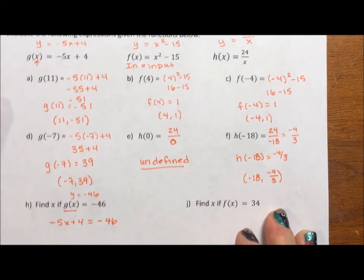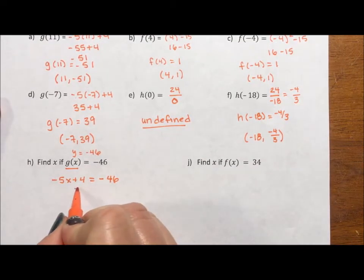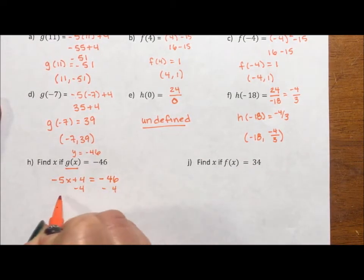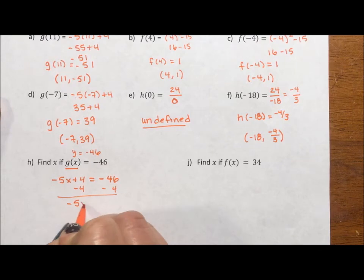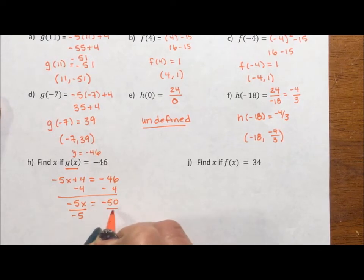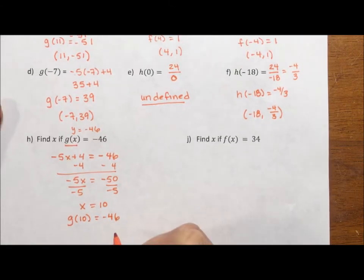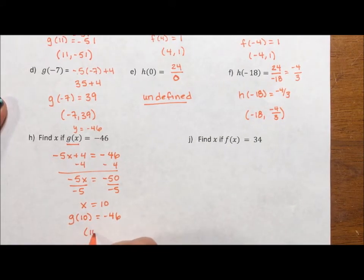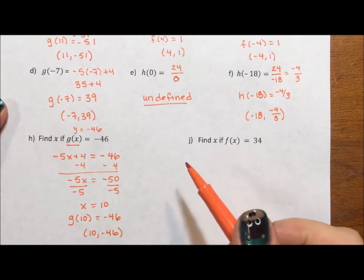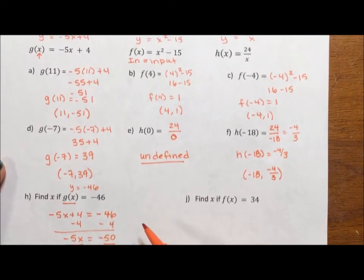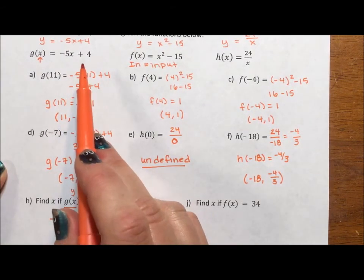What we want to do is subtract 4 from both sides. So -5x equals -50, divide by that -5, x is equal to a positive 10. In other words, g(10) equals -46, or (10, -46) is a point on the graph of g(x) = -5x + 4.